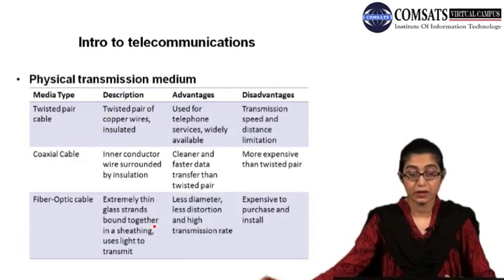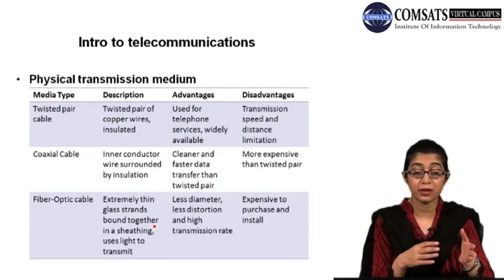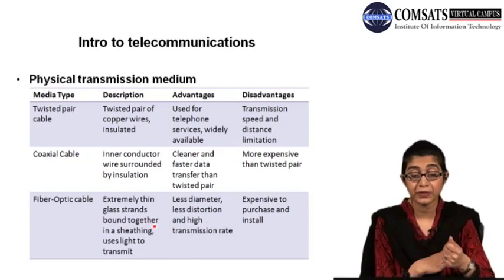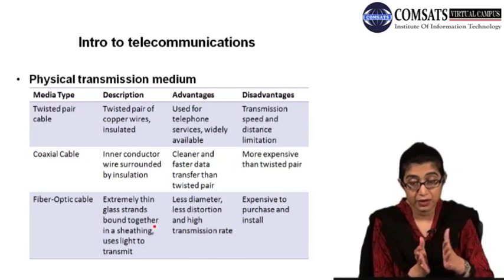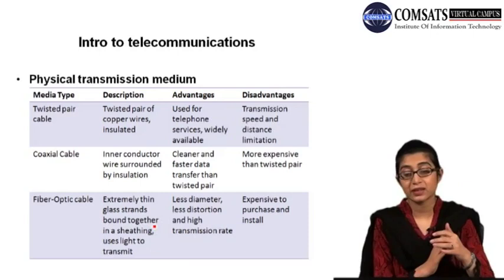Here is a comparison between different kinds of physical transmission media. Number one is a twisted pair cable — basically a twisted pair of copper wires, insulated or not insulated, widely used for telephone services. Its disadvantage is transmission speed and distance limitation; the twisted pair cable transmission speed is not that high and it has distance limitations. Its speed goes from around 10 megabits to 1 gigabit per second.